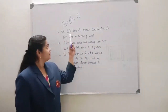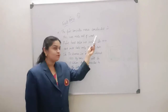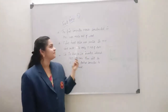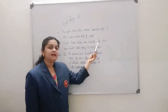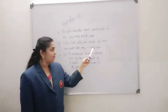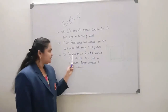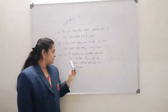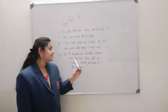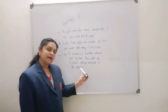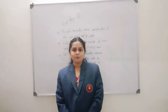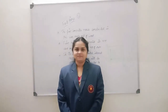Fact time! The first computer mouse, constructed in 1964, was made out of wood. The first hard drive was created in the year 1979 and could hold only 5 MB of data. Sir Tim Berners-Lee invented the internet in the year 1989. By now, there will be 17 billion devices connected to the internet. Hope you understood the poem thoroughly. Read well. Thank you.